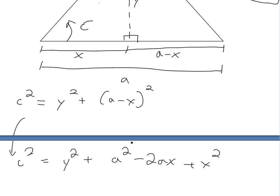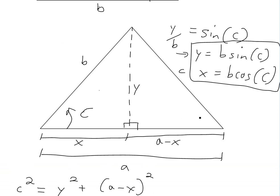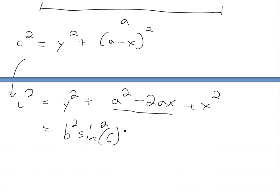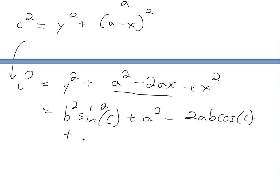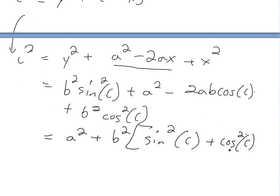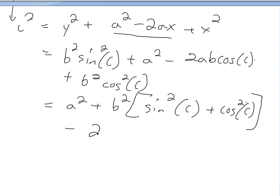Now if we just plug in the values of X and Y: Y squared equals B squared times sine squared C, and then we have A squared, minus 2A times X which is B cosine C, plus X squared which is B squared cosine squared C. Rearranging this, we get A squared plus B squared times (sine squared C plus cosine squared C), subtracted by 2AB cosine C.